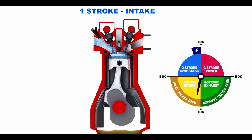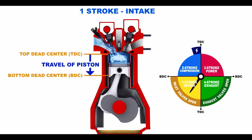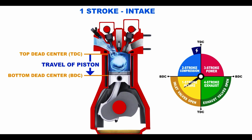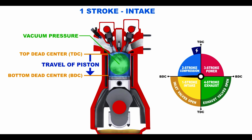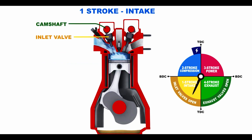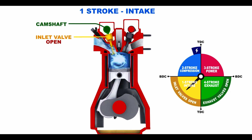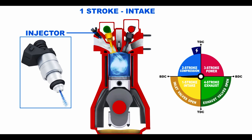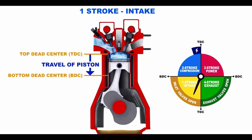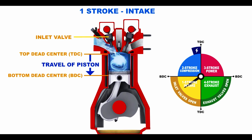Stroke 1 – Intake. The piston travels down from top dead center to bottom dead center. The cylinder volume expands, creating vacuum pressure. At the same time, the camshaft causes the inlet valves to open, allowing the fuel-air mixture to enter the cylinder. In modern-day vehicles, gasoline is supplied via an injector, whereas in the past, carburetors performed this function. The stroke is completed when the piston reaches bottom dead center and the inlet valves close.